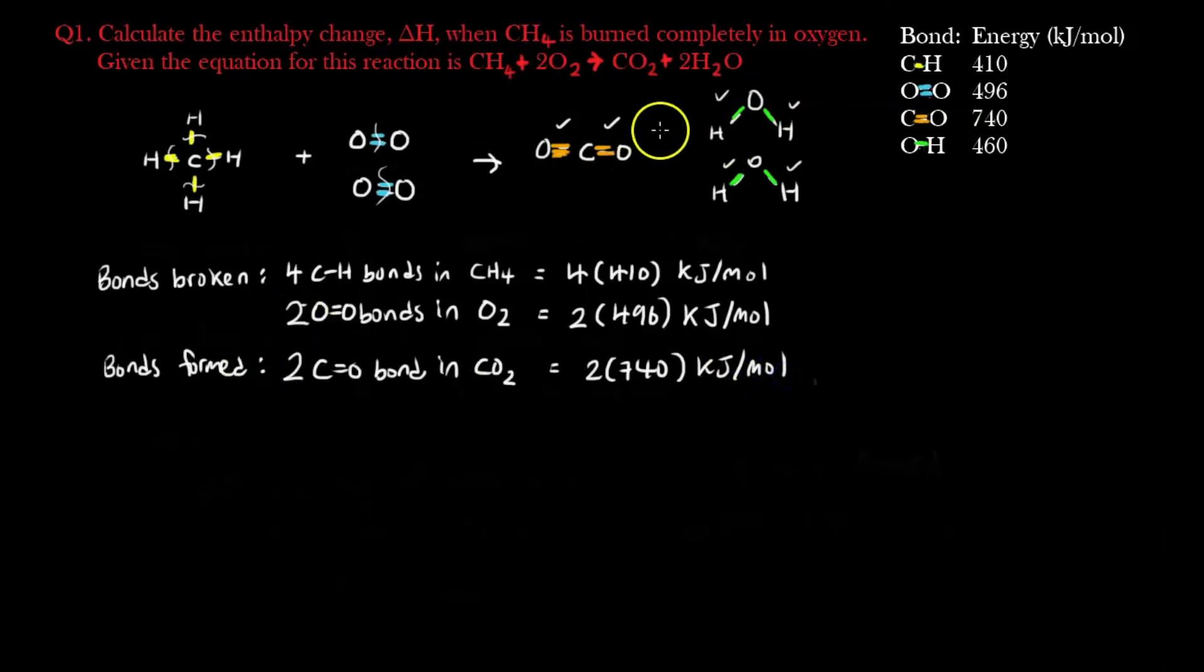Finally, to form this as well, I need 4 OH bonds, you can see, 1, 2, 3, 4. So I have 4 OH bonds in water H2O, and this one requires 4 times, because 1 OH bond is worth 460 kJ per mole to form, so I need 4 of them. So to recap...